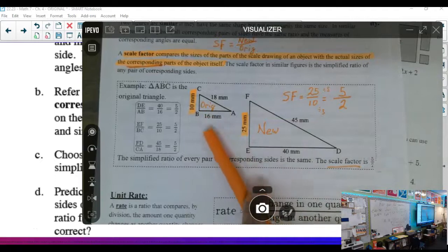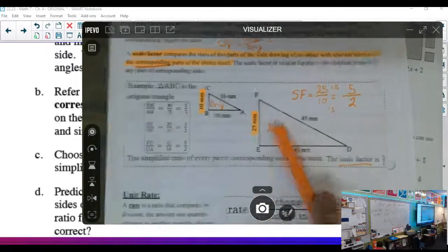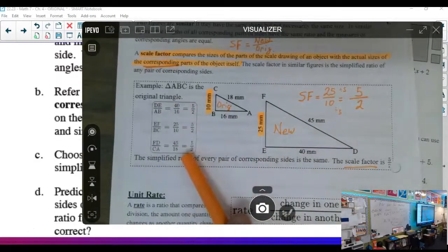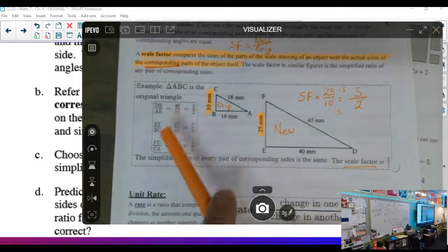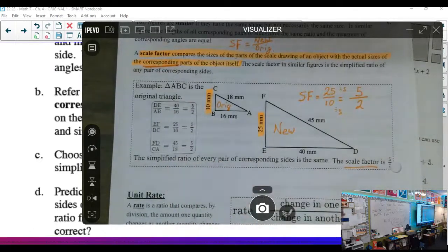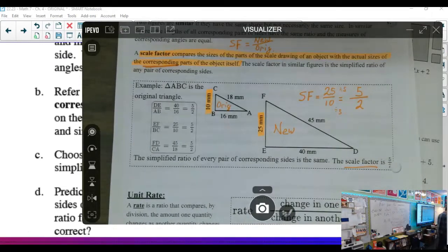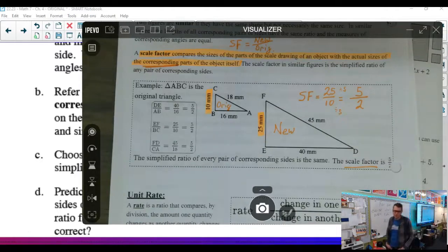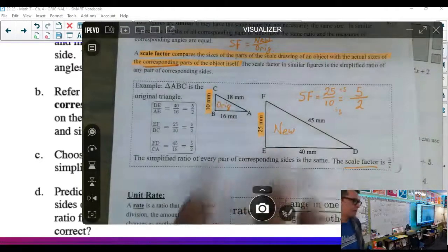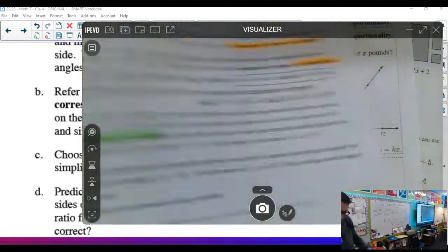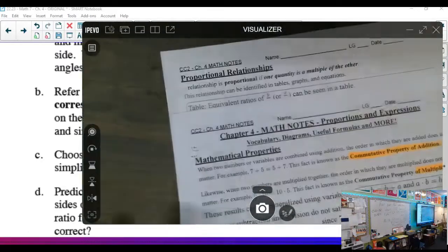The scale factor from this original shape to this new shape, every way we set it up, whatever matching sides you look at, simplifies to 5 over 2. Questions on that? These math notes should not be blank anymore. We have a bunch of stuff written in our math notes. If you want to put that in a sleeve, we probably won't write anymore on this today. If I was you, I'd just clip it in your binder, sleeve it later.